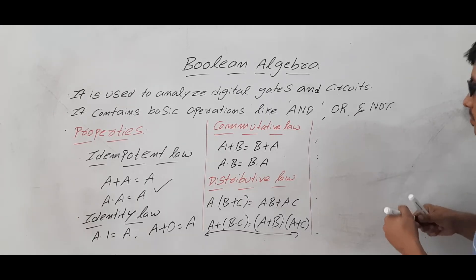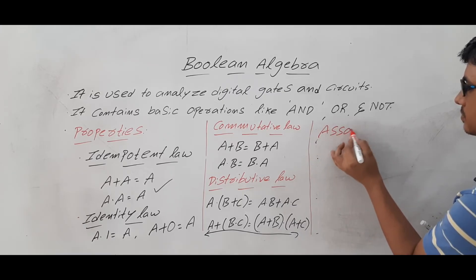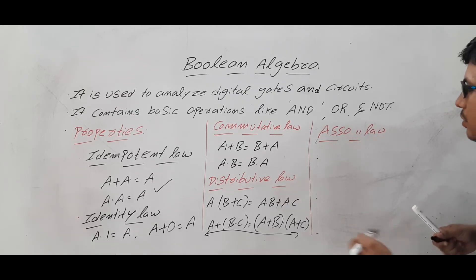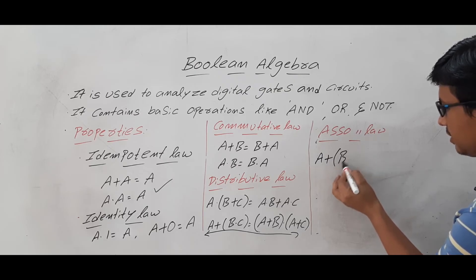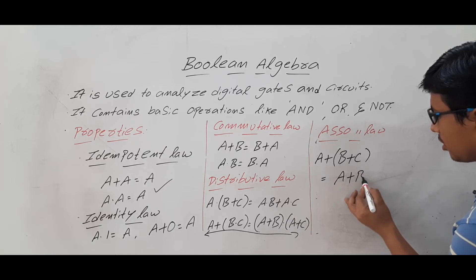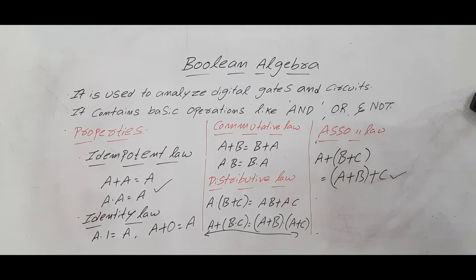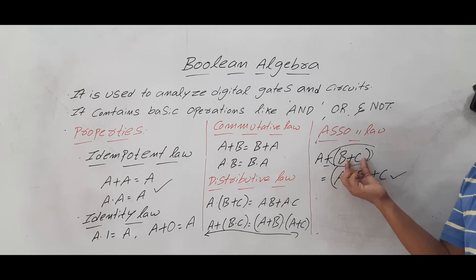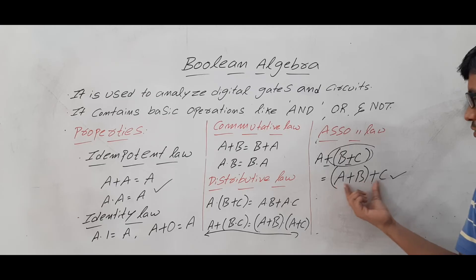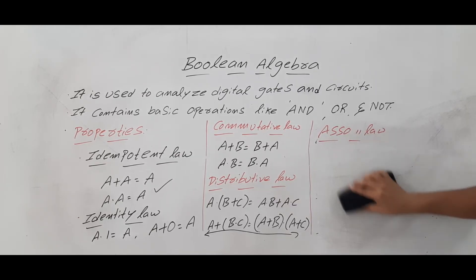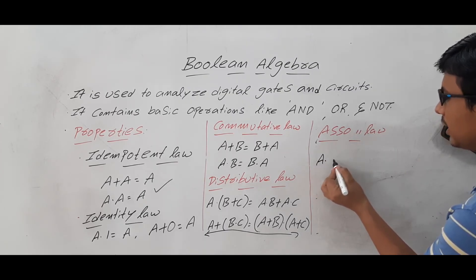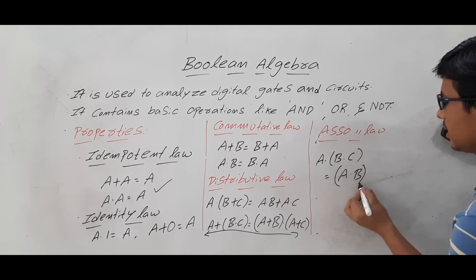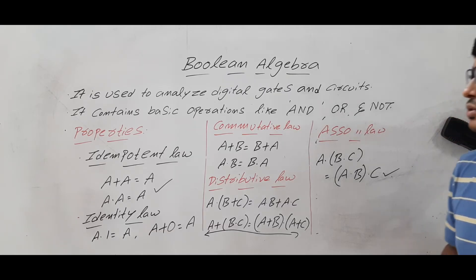Next we have the Associative law. The Associative law states: A OR (B OR C) = (A OR B) OR C. When both operations have the same priority, right associativity means you first perform B OR C then OR with A, while left associativity means you first perform A OR B then OR with C. The same applies for AND: A AND (B AND C) = (A AND B) AND C.